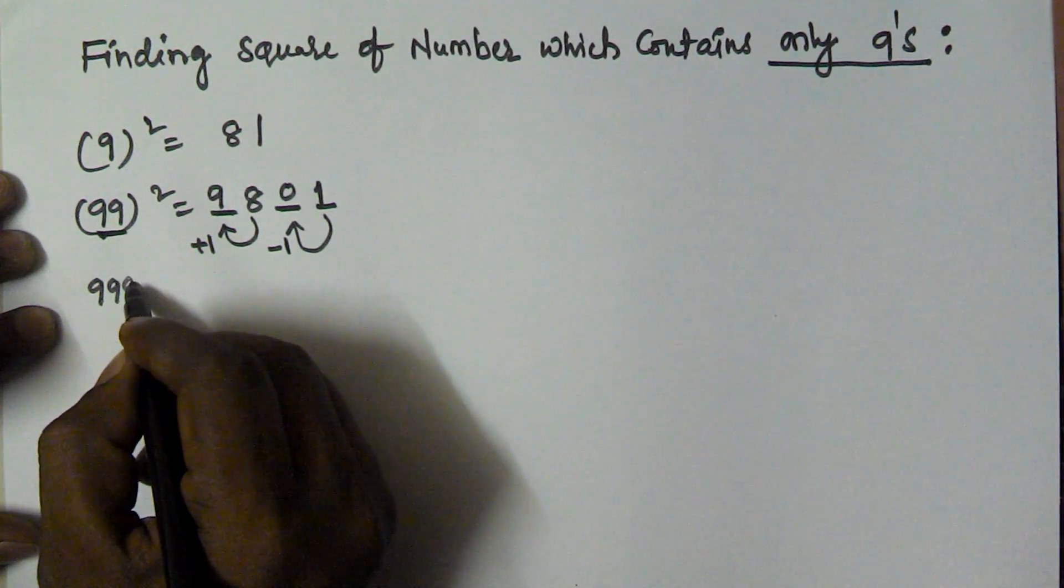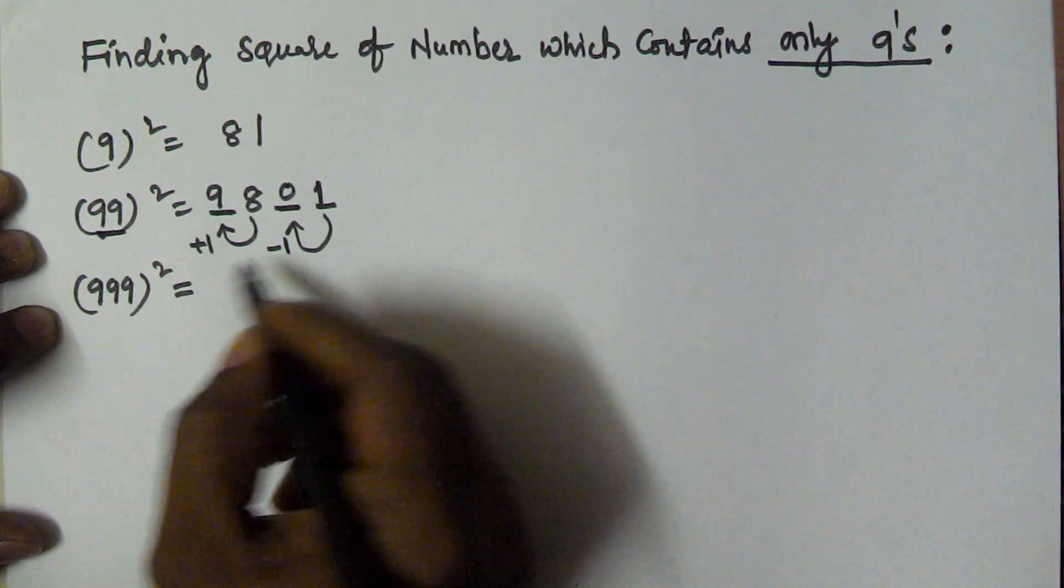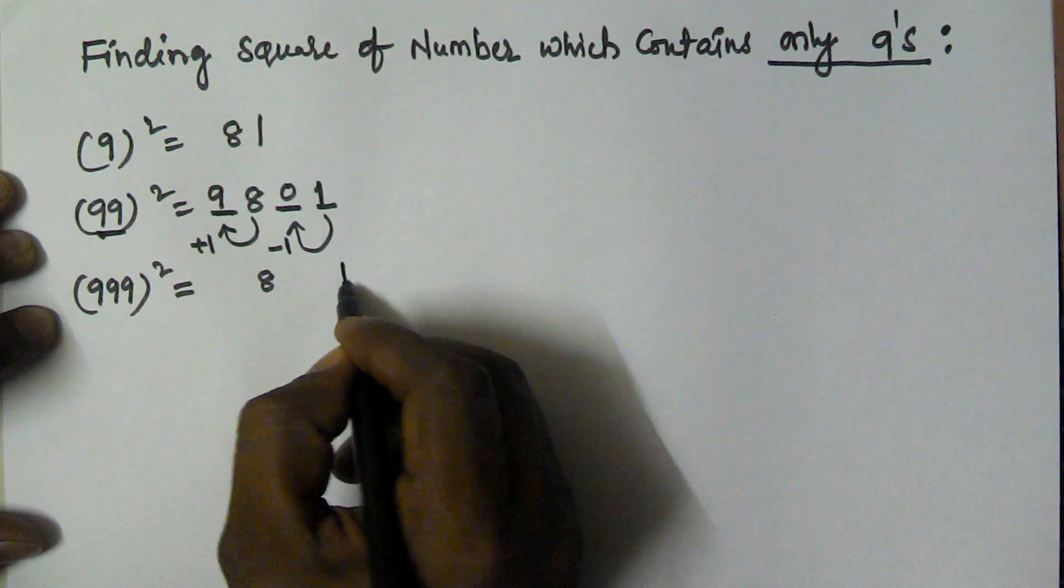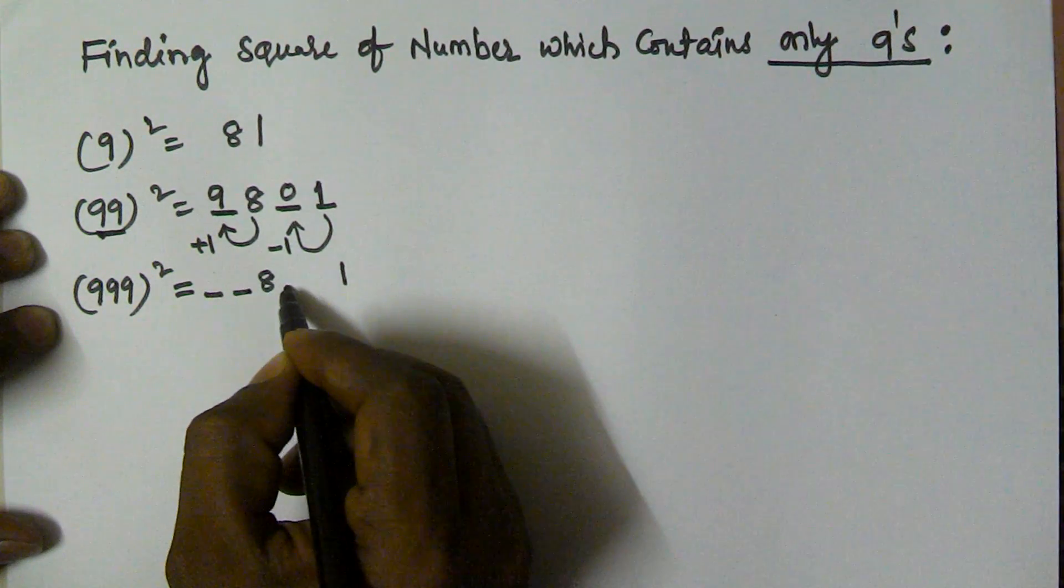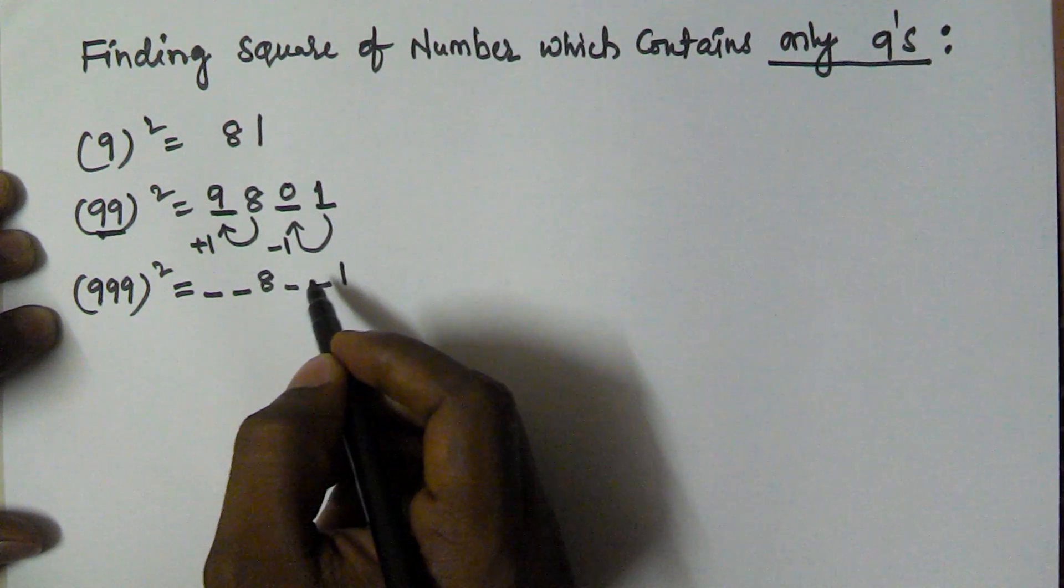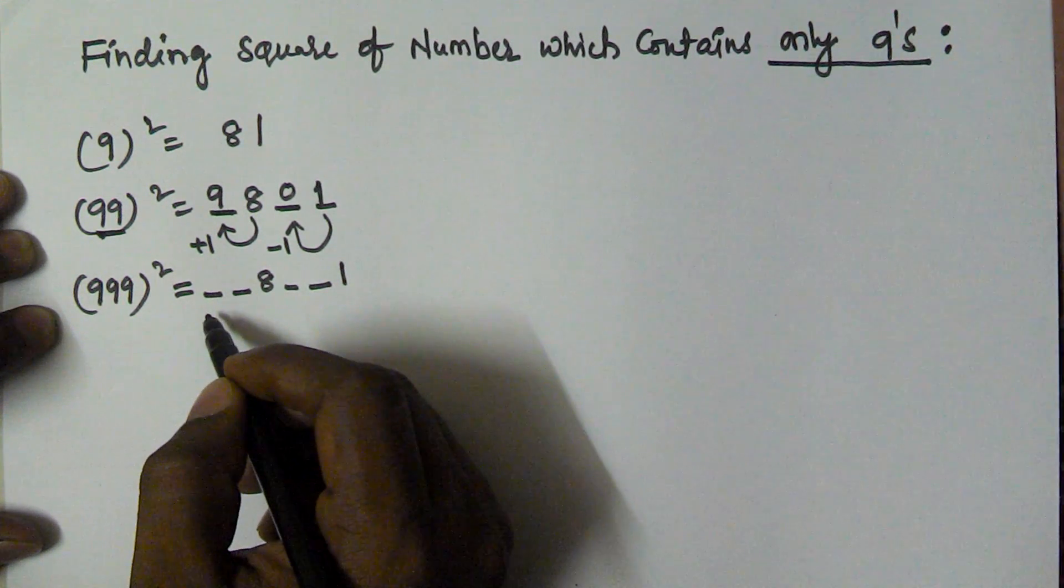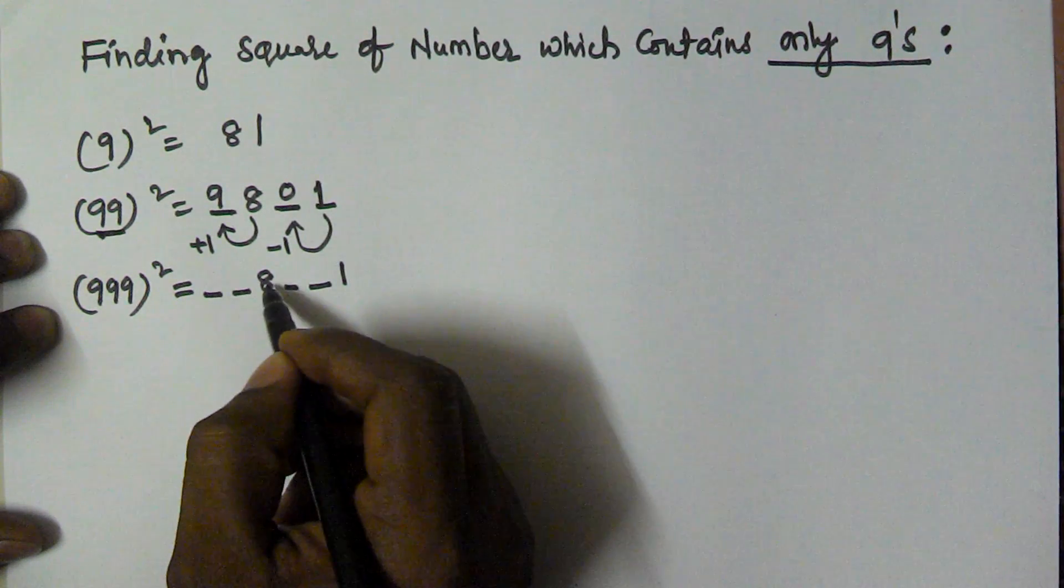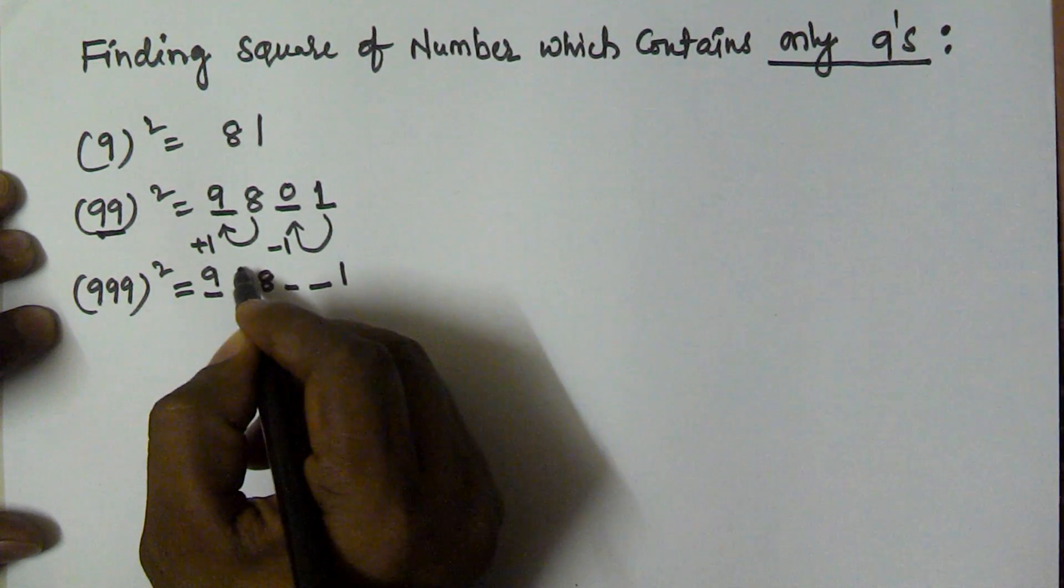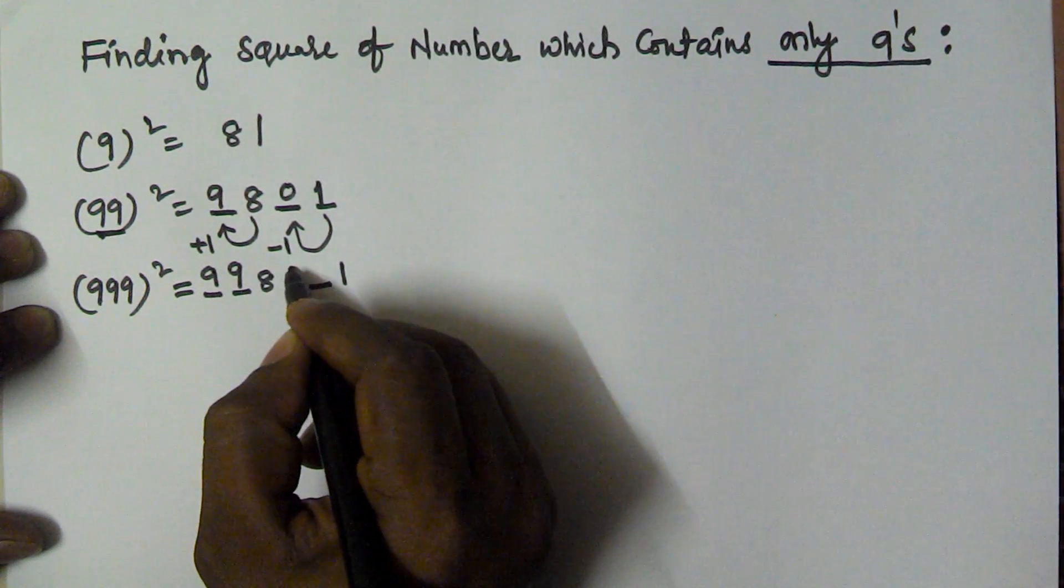Let's see another example: 999 square. 9 square is 81 which contains 3 digits, so I'm taking 2 places before 8 and 2 places before 1. Here I fill up with plus 1 of this number. Plus 1 of 8 gives 99. Minus 1 of this number is 00.